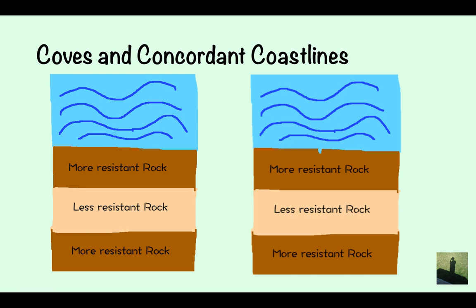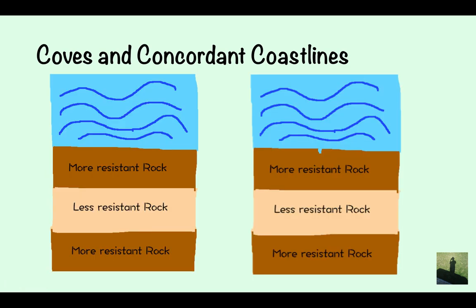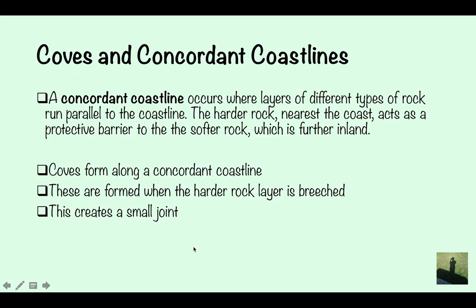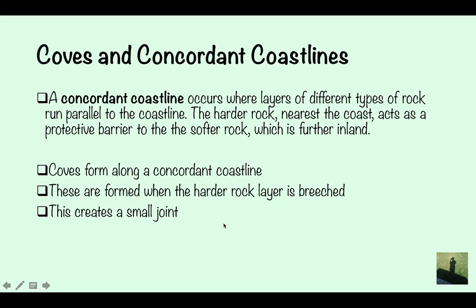Coves and concordant coastlines. A concordant coastline occurs where layers of different types of rock run parallel to the coastline. The harder rock nearest the coast acts as a protective barrier to the softer rock further inland. You've got hard rock, then softer rock, then hard rock again — the hard rock acts as a barrier to stop the less resistant rock from being eroded.